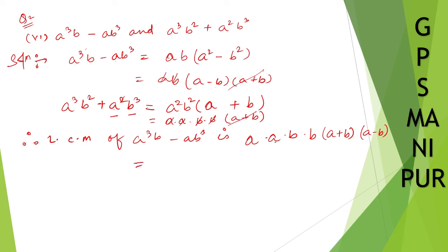So a into a will be a square, b into b will be b square. a plus b into a minus b will be a square minus b square. This is the required LCM. That's all, thank you so much, we will meet in the next video.